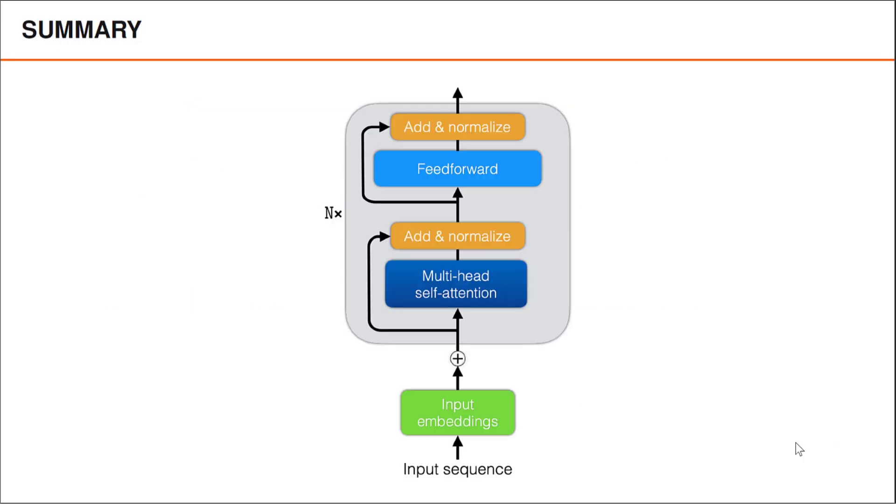To conclude, we take the input sequence and produce an input embedding where we add a positional encoding to each word embedding. We then pass the sequence through capital N encoder blocks, which all have the same structure, but their own parameters. Inside each encoder block, we have a multi-head attention layer, followed by an add and normalize layer, a feedforward network, and finally another add and normalize layer. The input and output from every single layer in every encoder block has the same dimensions as the matrix received as input to the first encoder block.